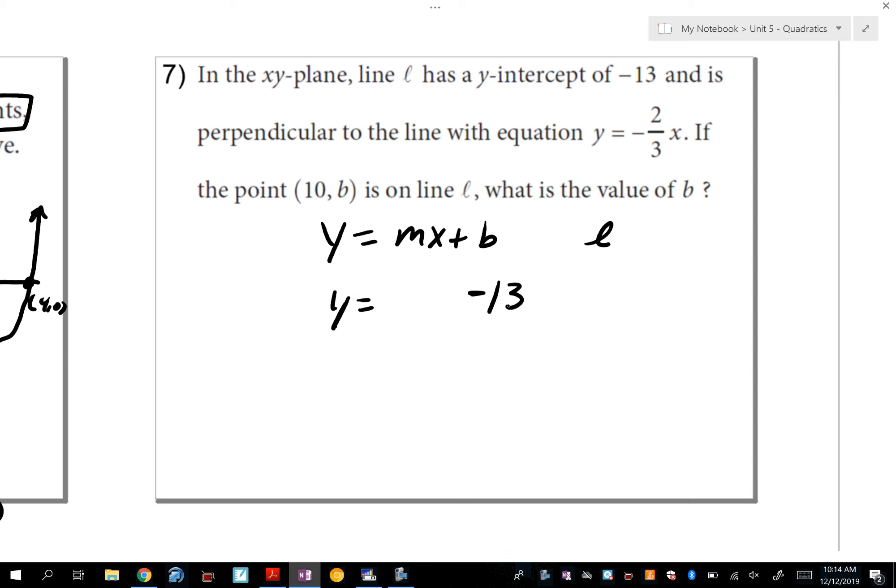It also says that there's a line perpendicular to line L that has the slope of negative 2 thirds. And you have to know the relationship between perpendicular lines and their slopes. And that relationship is they have opposite reciprocal slopes. So if the slope of this line is negative 2 thirds, the slope of line L is going to be positive 3 halves. So I replaced m with positive 3 halves, and I wrote my line L. So there's line L in slope-intercept form. It doesn't ask for that, though.